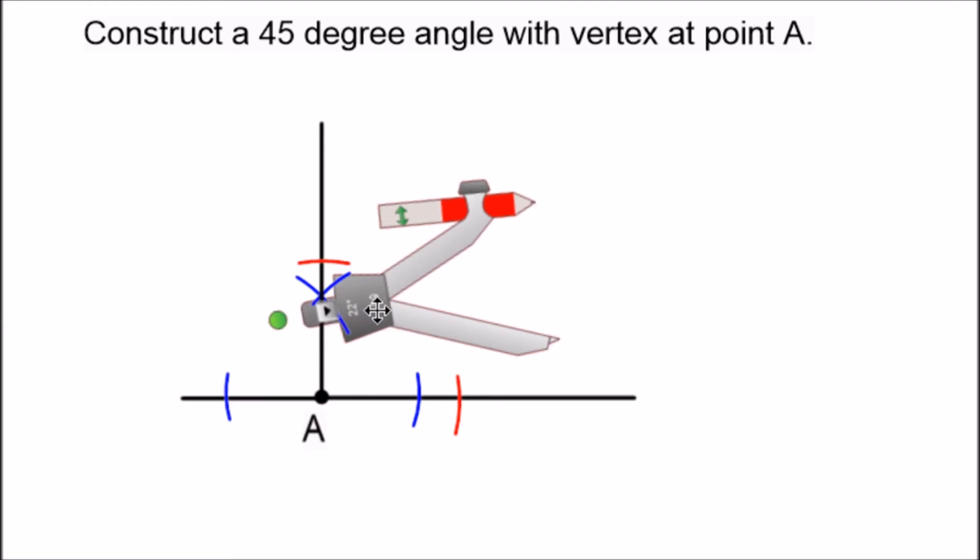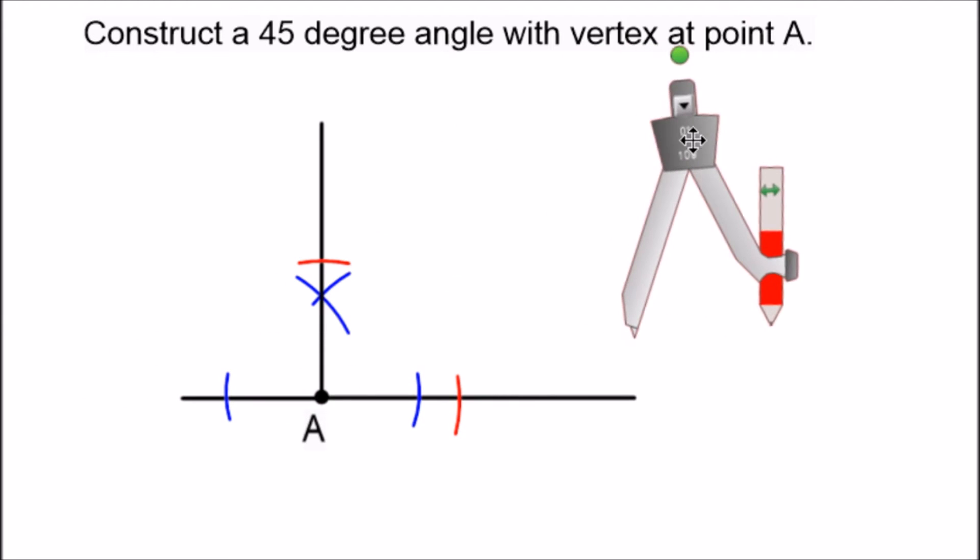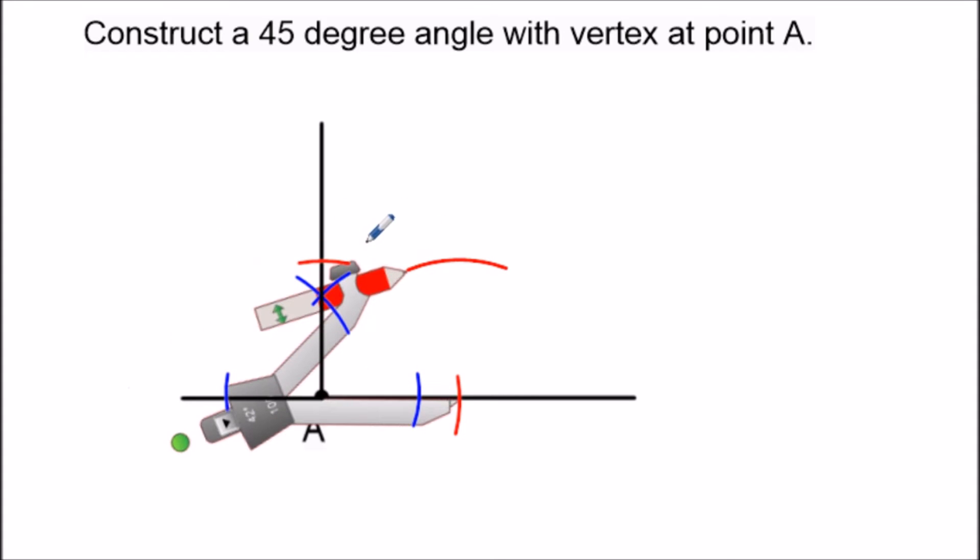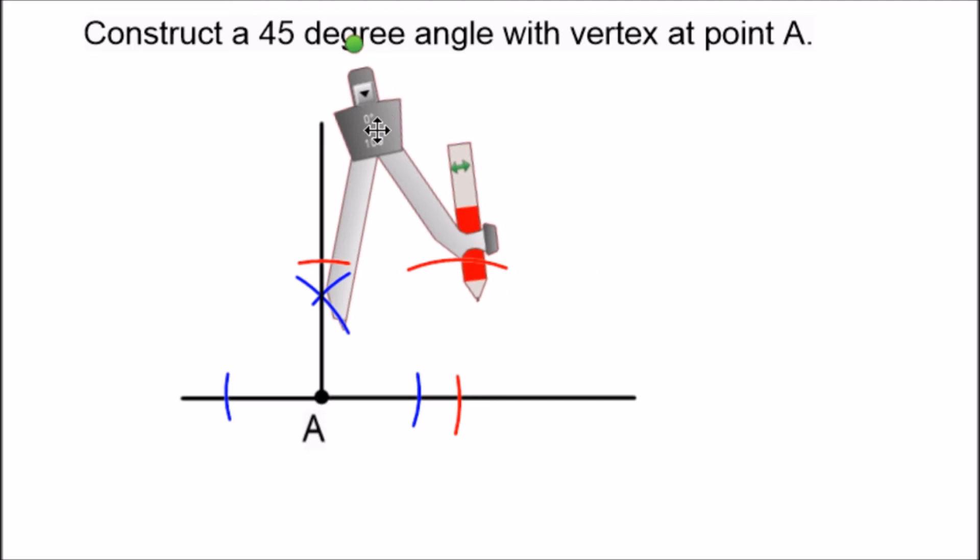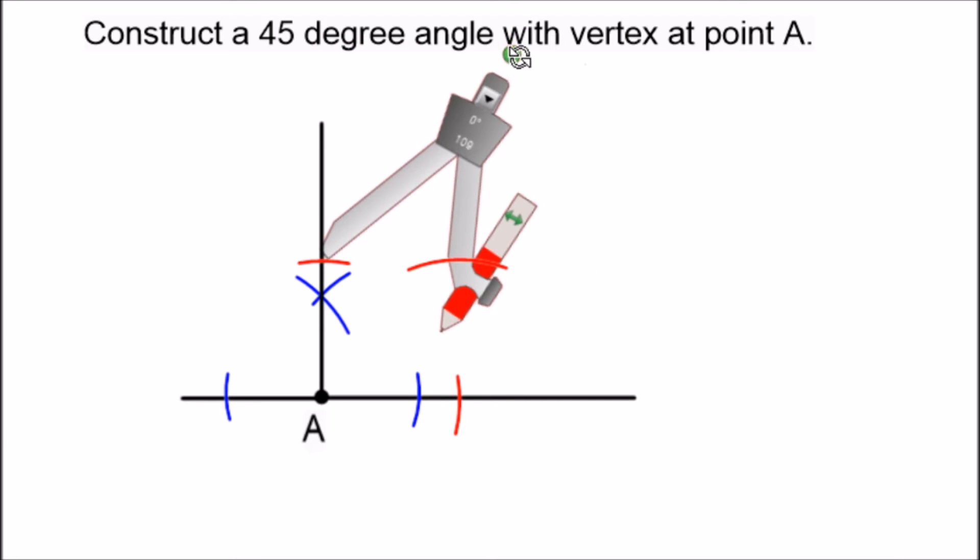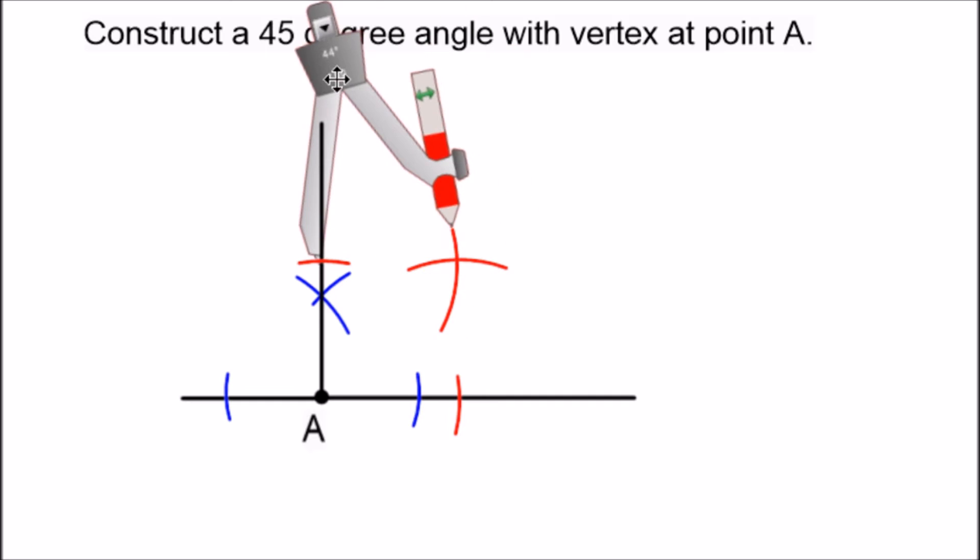So with these new intersection points we're going to set the compass here and we swing an arc in the inside space here from the first intersection point and we repeat this process from the other intersection point so that we have two intersecting arcs.